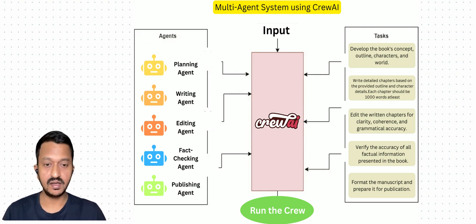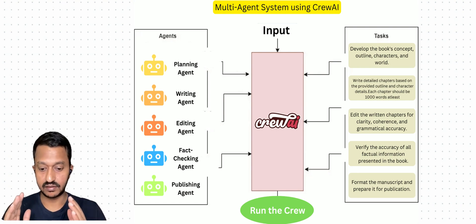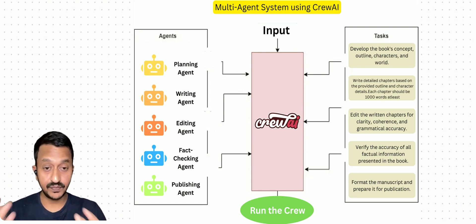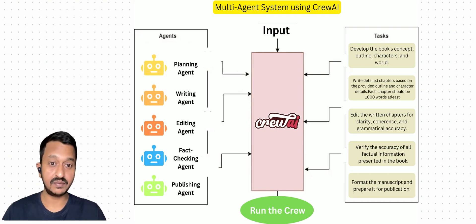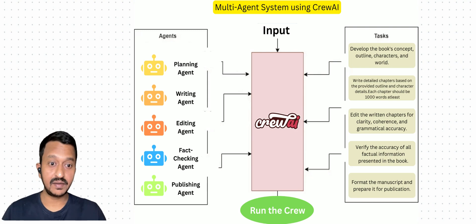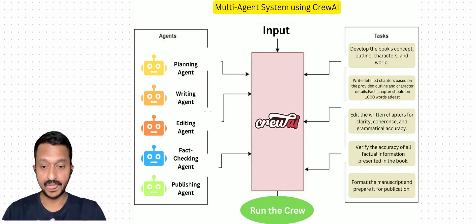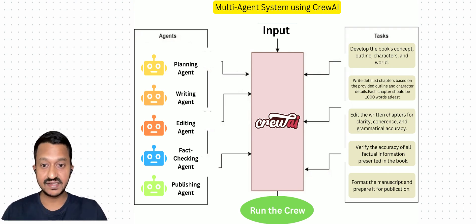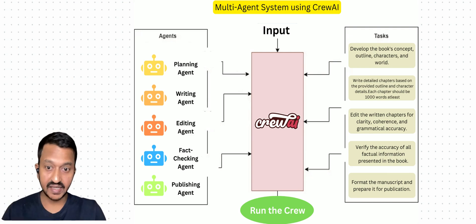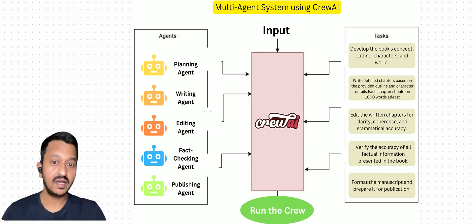The problem statement here is: we want the agentic system to write a book, review the book, see if there are any mistakes, do edits, and at the end publish the book. So it has different steps: planning, writing, editing, fact-checking, and publishing. At each stage, we are defining different agents — a planning agent, writing agent, editing agent, fact-checking agent, and publishing agent.